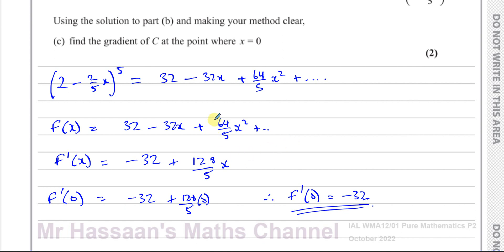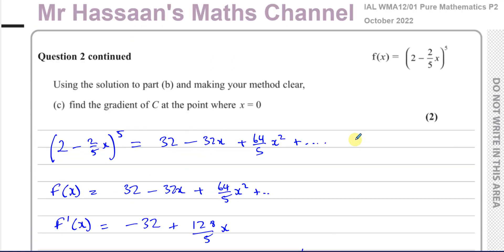So the answer to part C: the gradient at the point where x equals 0, using the answer to part B, is negative 32. That's the answer to question number 2 — pretty simple. Other questions from this paper can be found in the playlist at the end of the video. Questions on the factor theorem and remainder theorem will be linked here, and questions on binomial expansion here. You can also subscribe to my channel by clicking the link in the middle. Thank you for watching and see you soon.